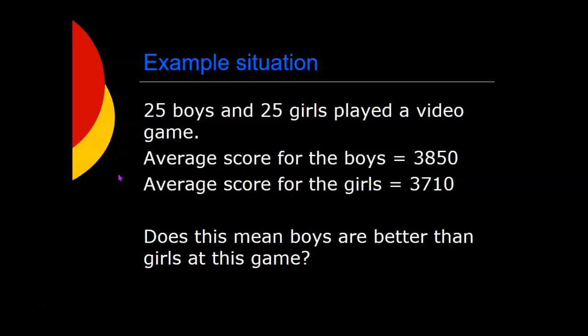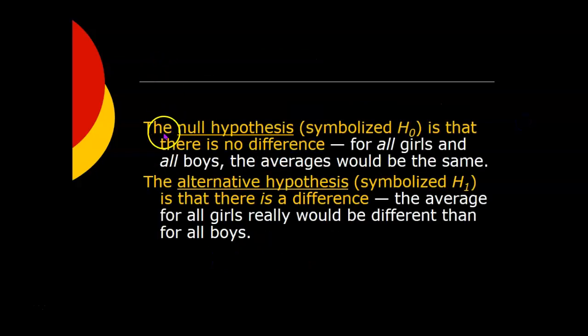Well, maybe, maybe not. These particular boys scored higher than these particular girls on this particular time playing the game. But does that mean that boys are better than girls in general? So in this example, the null hypothesis would be that there is no difference in general. That for all girls and all boys, the averages would be the same. If you could somehow find the average score for all the boys in the world and all the girls, those averages wouldn't be any different from each other. And the alternative hypothesis would be that there is a difference. That the average for all girls really would be different than the average for all boys.